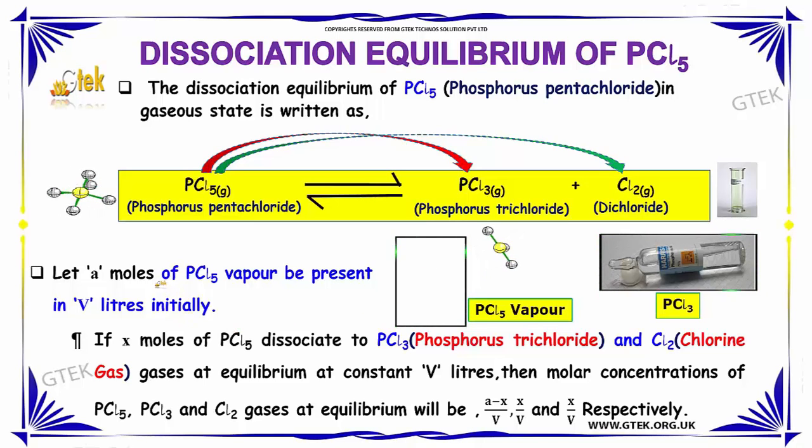Let A moles of PCl₅ vapor be present in V liters initially. If X moles of PCl₅ dissociate to PCl₃ and Cl₂ gases at equilibrium at constant V liters, then the molar concentrations of PCl₅, PCl₃, and Cl₂ gases at equilibrium will be (A-X)/V, X/V, and X/V respectively.